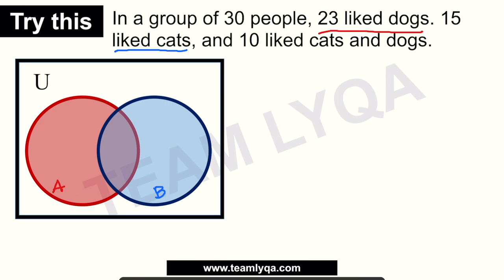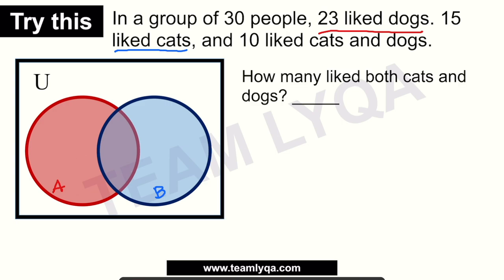The first question: how many liked both cats and dogs? The keyword 'both' signals the intersection. This is the people who like cats and also like dogs. According to the given information, 10 liked both cats and dogs — so we place 10 in the center intersection of the Venn diagram.